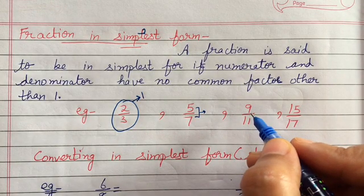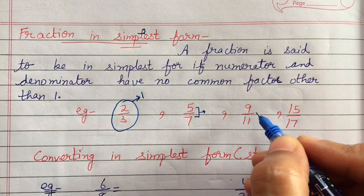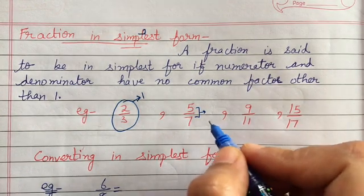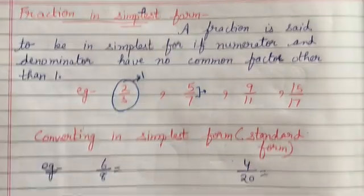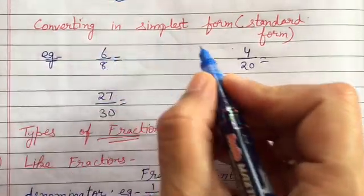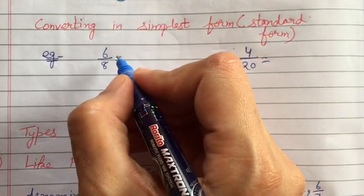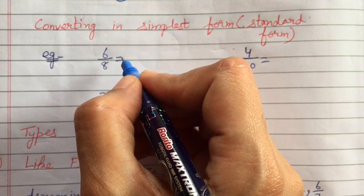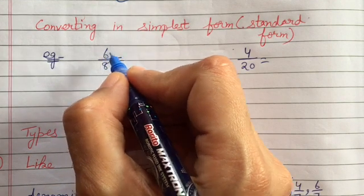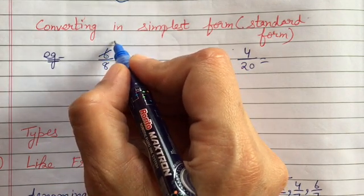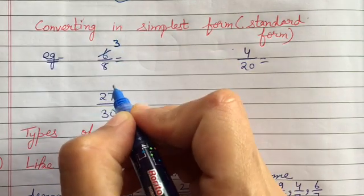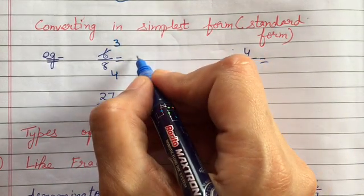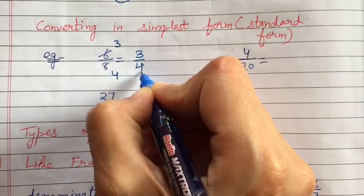We cannot simplify these further by dividing by any number because both numbers don't come in the table of any other digit. Simplest form means the smallest form. So how do we convert any fraction into simplest form? We divide — like 6 and 8 both come in the table of 2. If I divide 6 by 2 I get 3, and 8 divided by 2 is 4. Now 3 and 4 do not come in any common table. So the simplest form is 3 by 4.